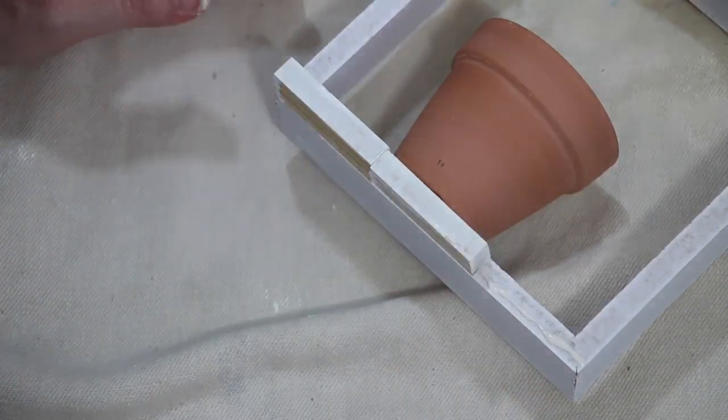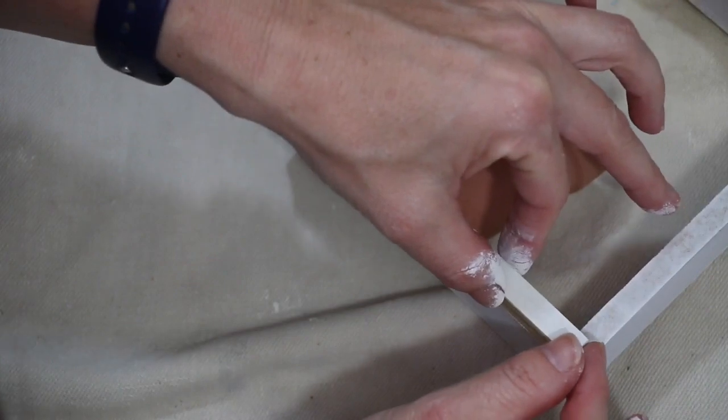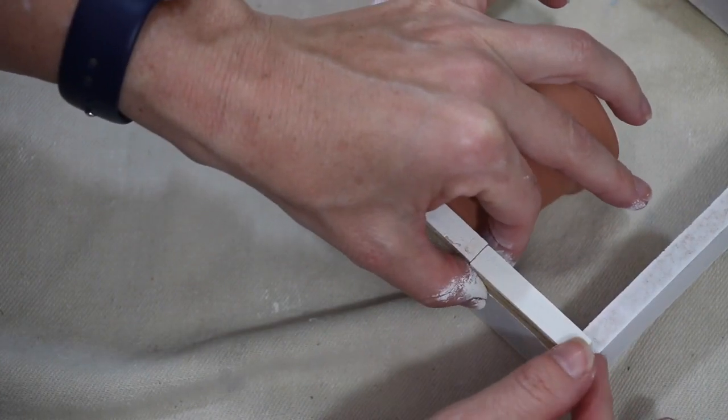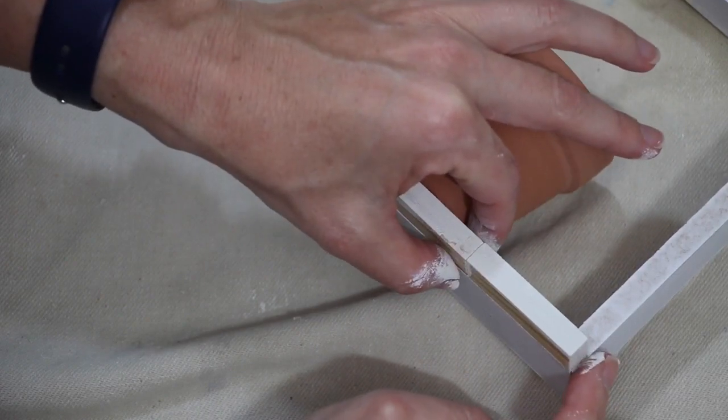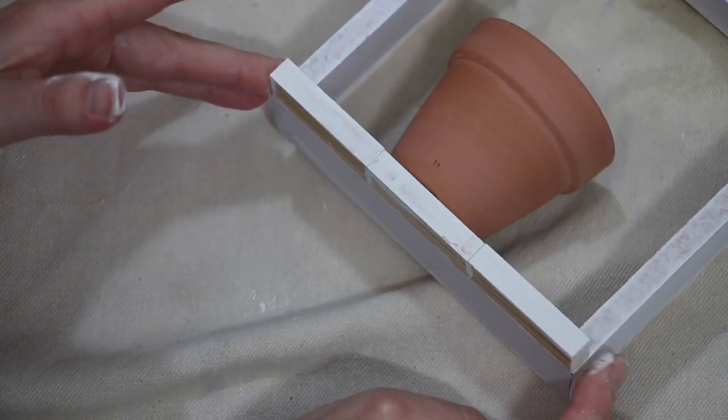Once that is all dried, I go in again with my Gorilla wood glue and I secure that to the base of my little planting tower and that will take care of my wobbling issue. Again, just set it aside and give time for the glue to set up.